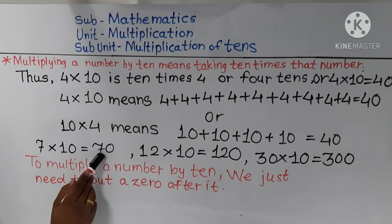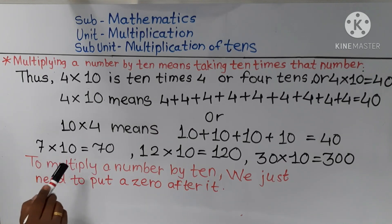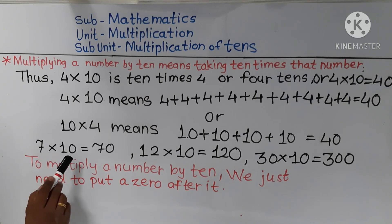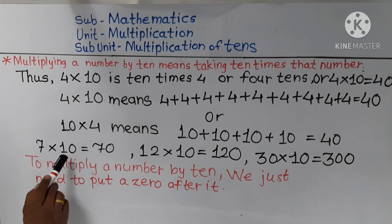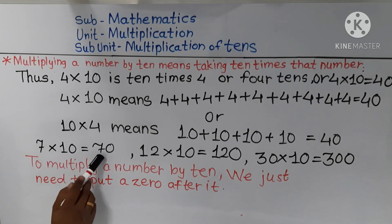10 times 1 is 10, 10 times 2 is 20, 10 times 3 is 30, 10 times 4 is 40, 10 times 5 is 50, 10 times 6 is 60, and 10 times 7 is 70.